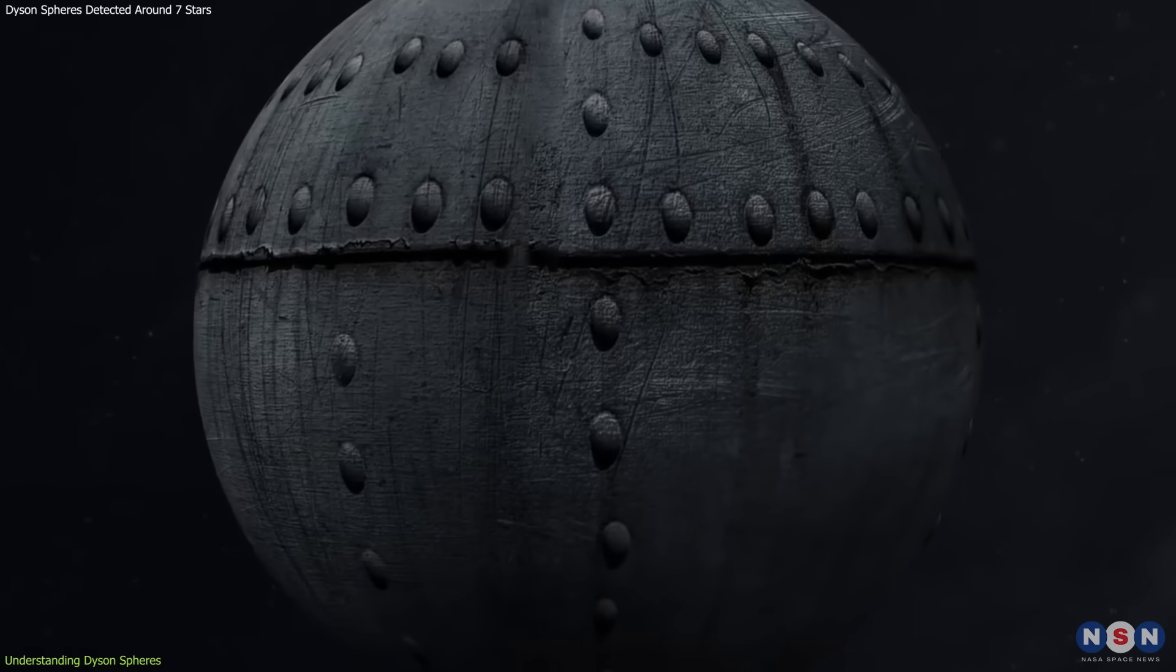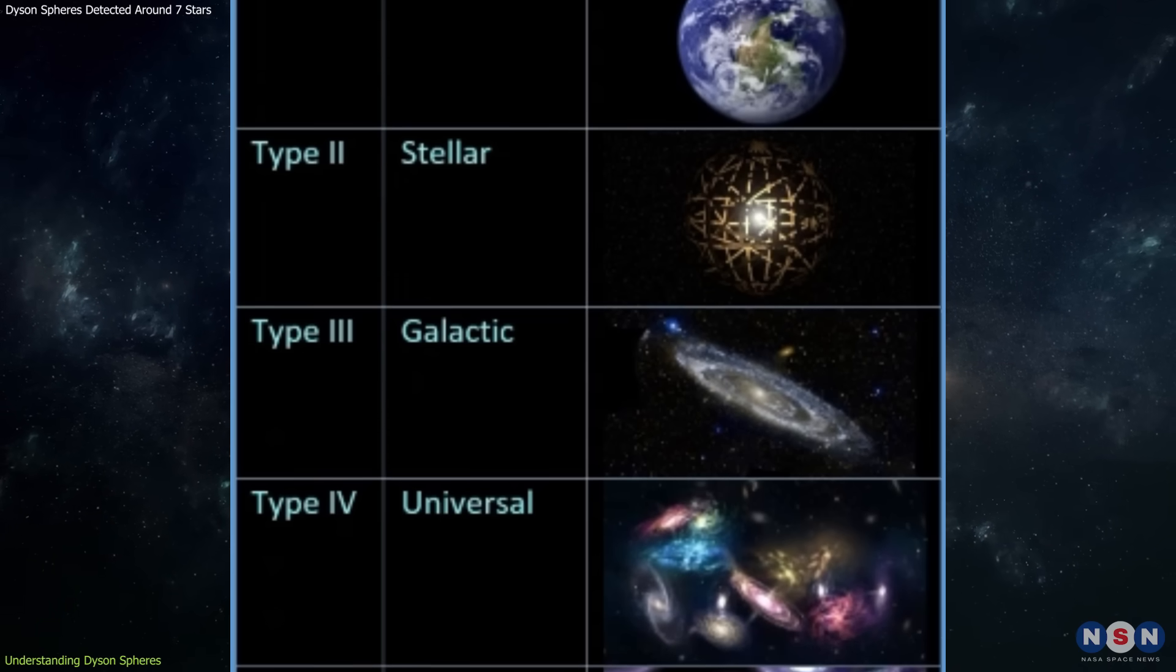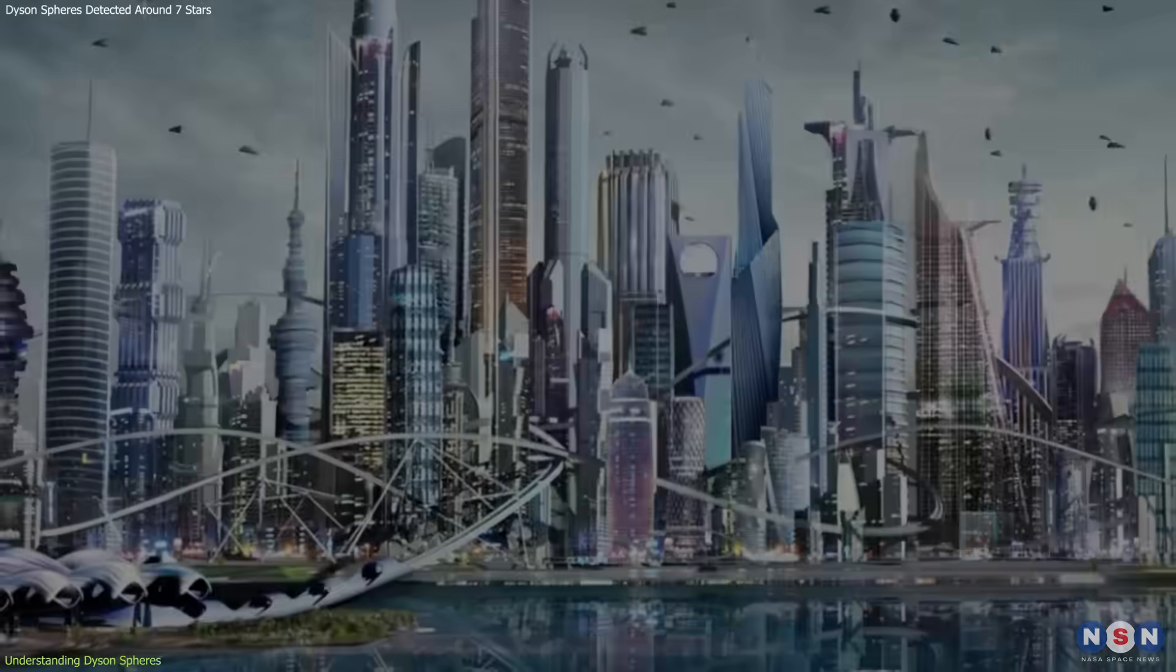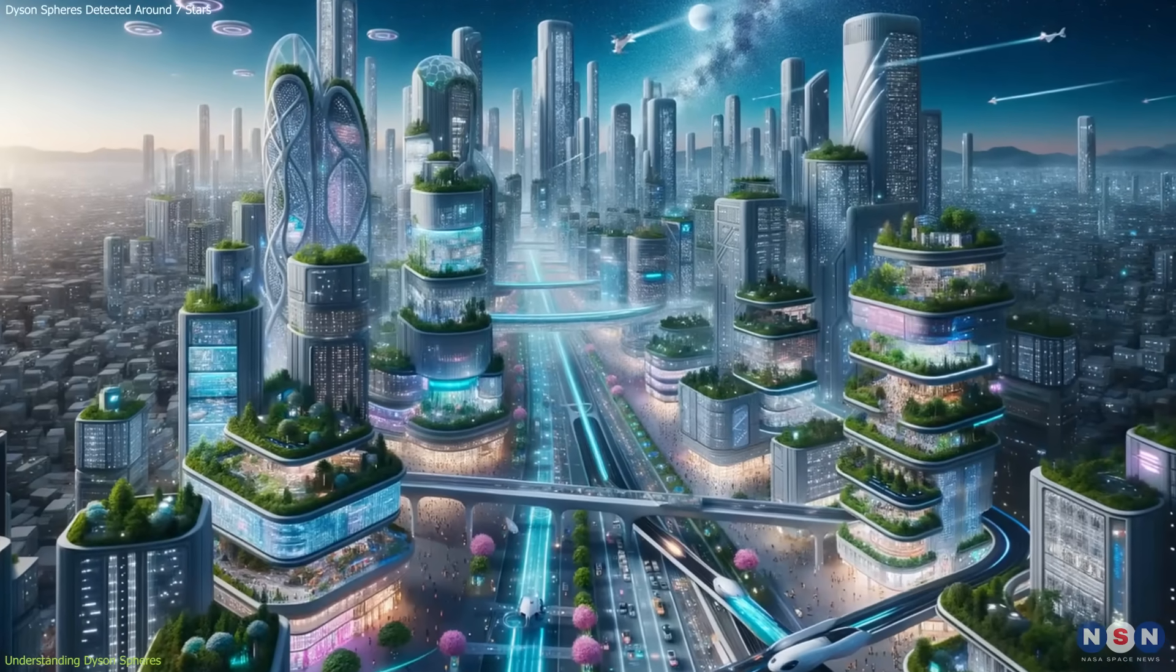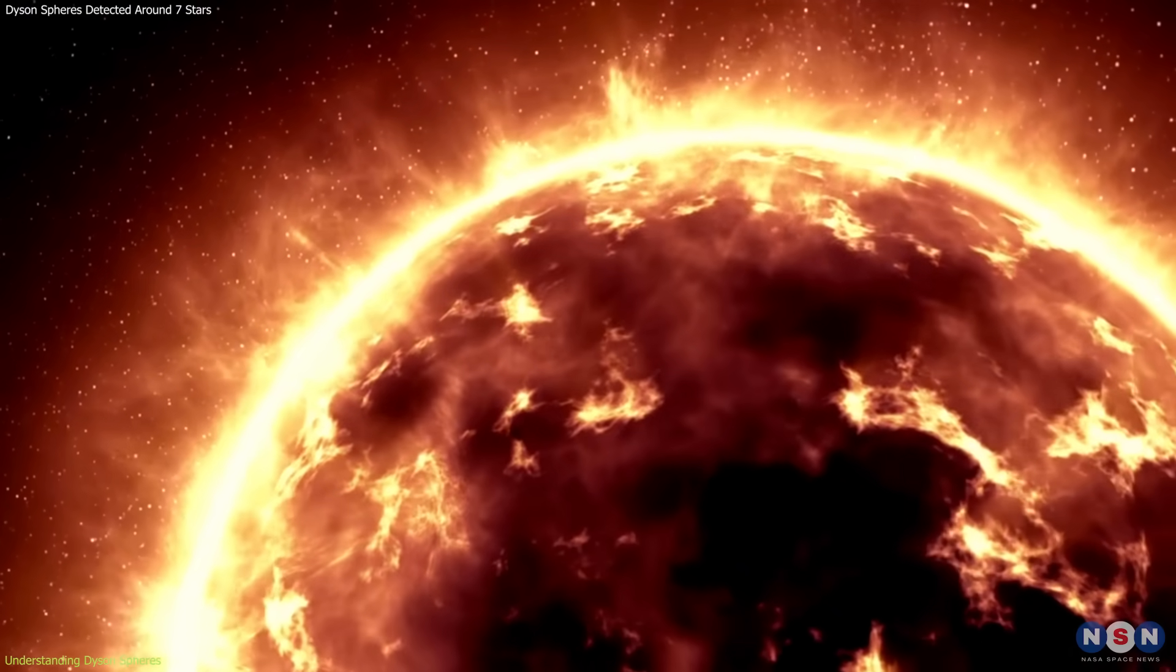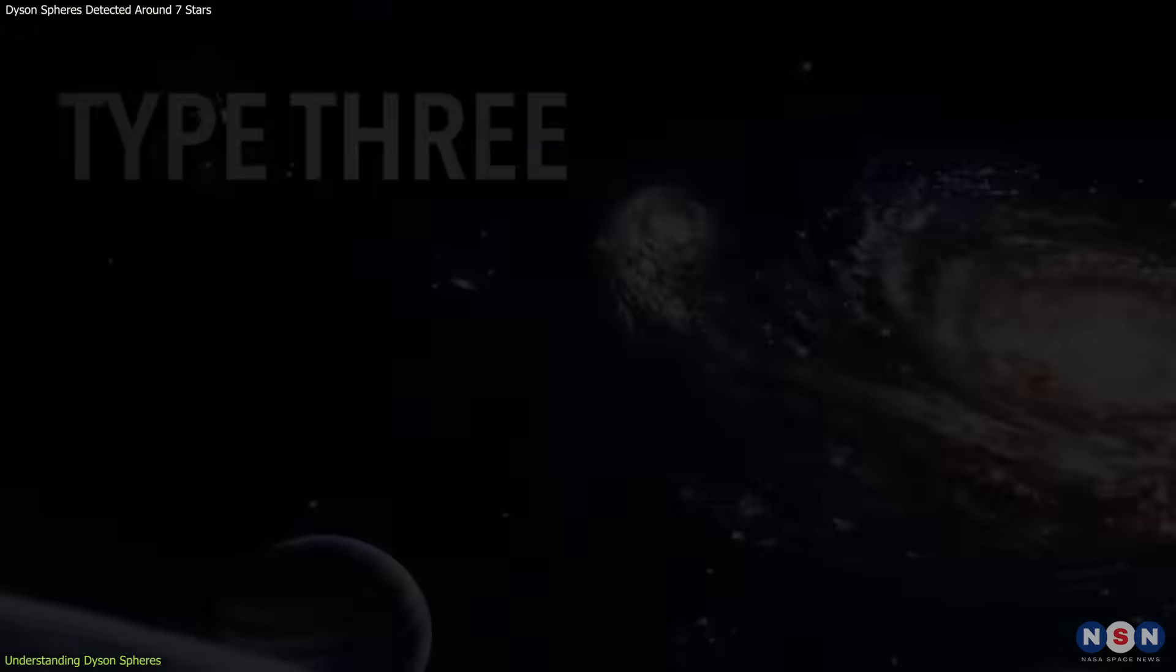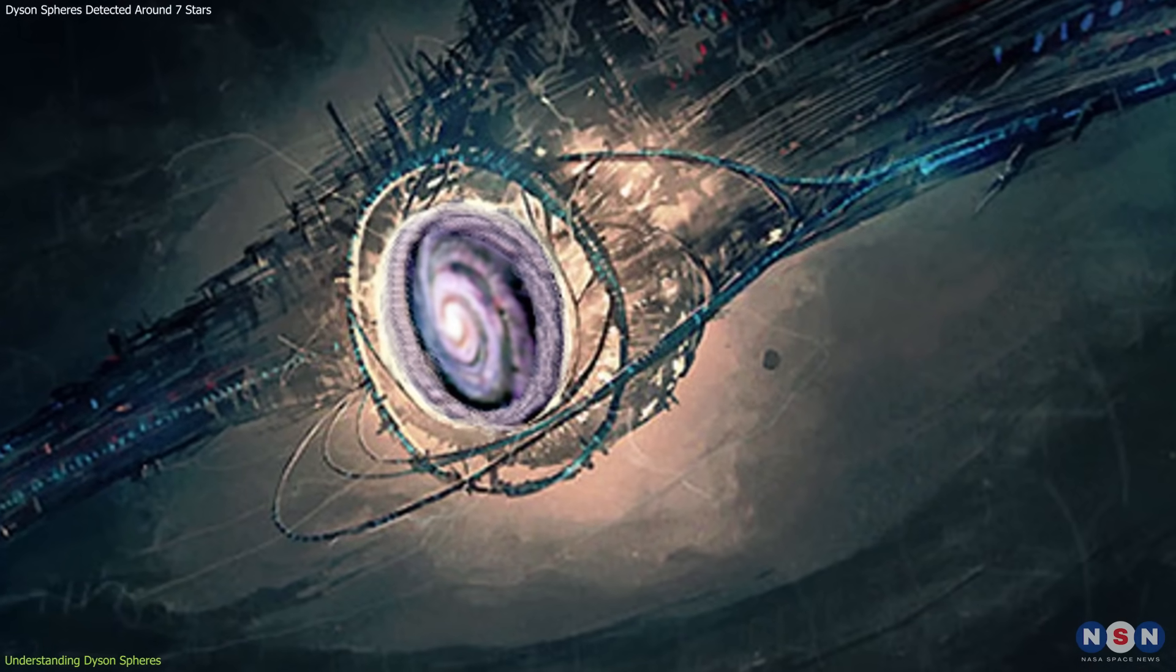The concept of a Dyson Sphere falls under the Kardashev Scale, which is a method of measuring a civilization's level of technological advancement based on its energy consumption. A Type I civilization, also known as a planetary civilization, can harness all the energy available on its home planet. A Type II civilization, or stellar civilization, can harness the energy of its entire star, which would be achieved through the construction of a Dyson Sphere. A Type III civilization, or galactic civilization, can harness the energy of an entire galaxy.